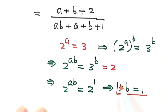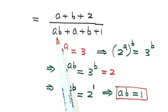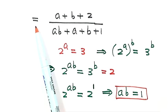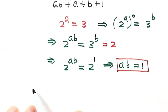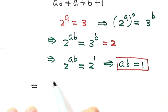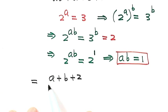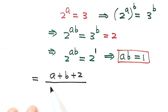So then we're going to use this result and replace ab here. Now let's continue with this equal sign. Use 1 to replace a times b. So let's continue the equal sign. Then here just a plus b plus 2. The bottom, ab is 1, then plus a plus b plus 1.